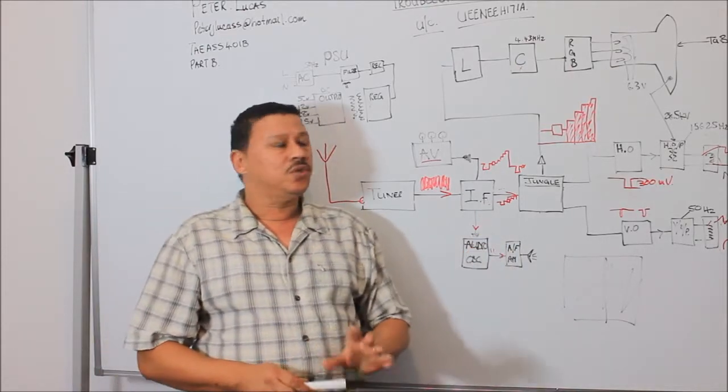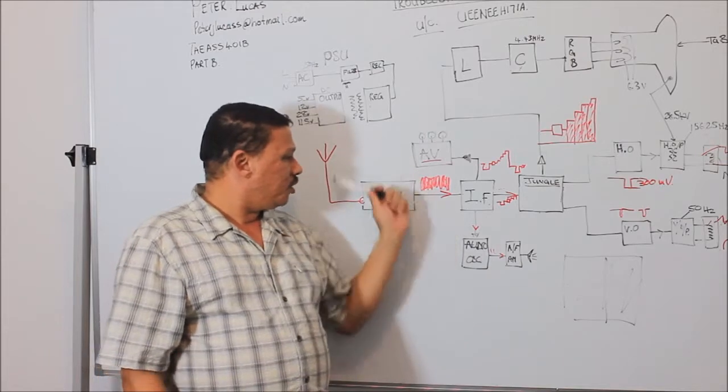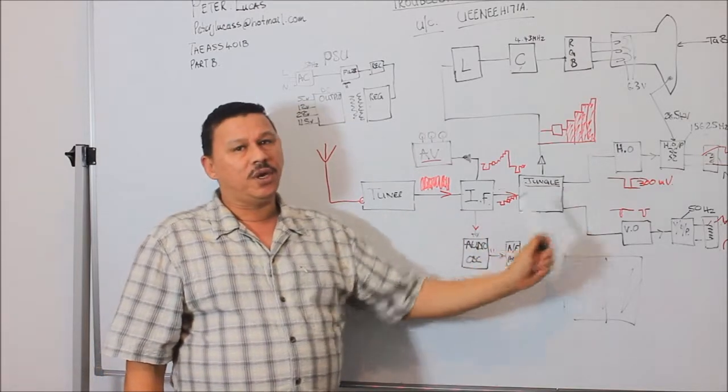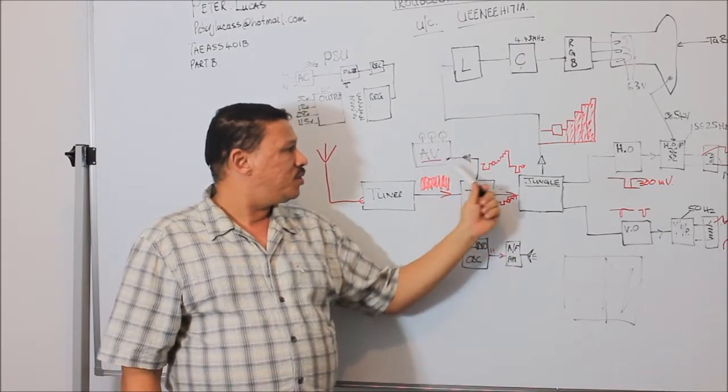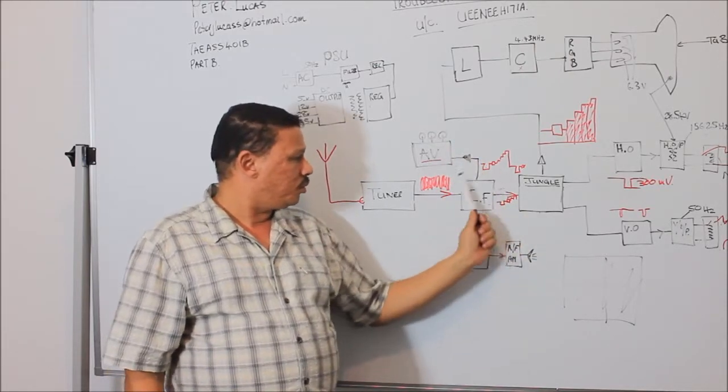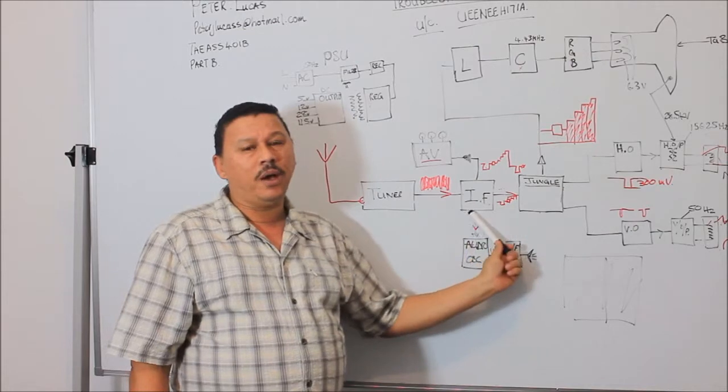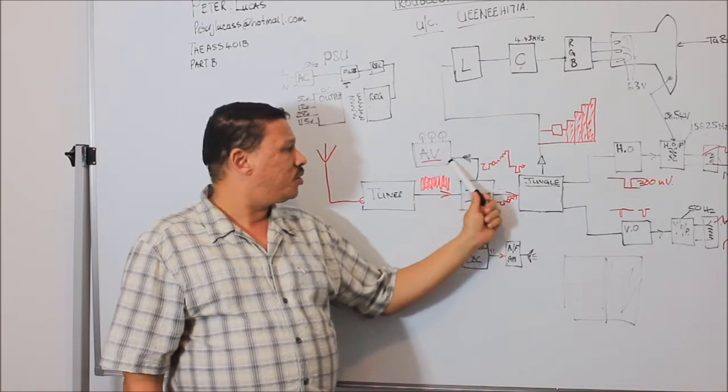If you have a situation where there is signal coming in so you can receive a television reception signal but no AV signal. Possible situation would be the IF stage or the AV stage.